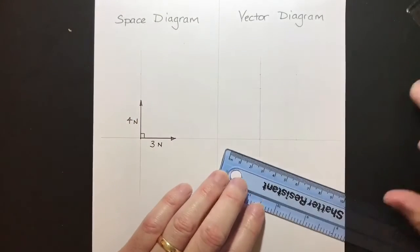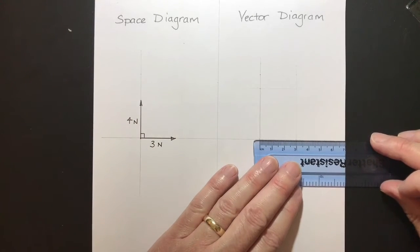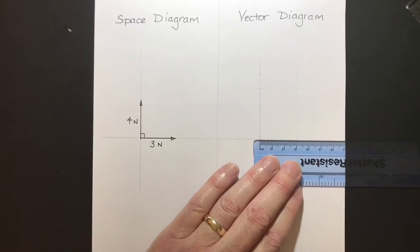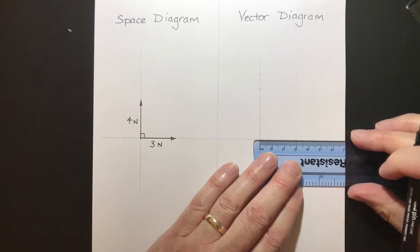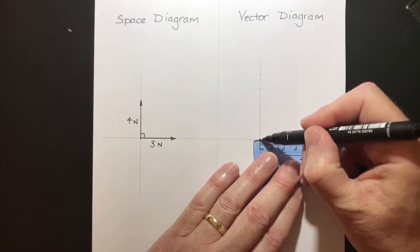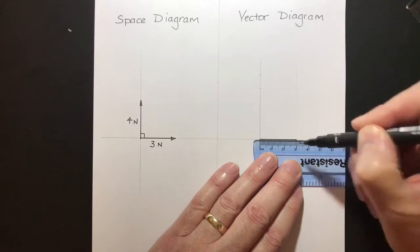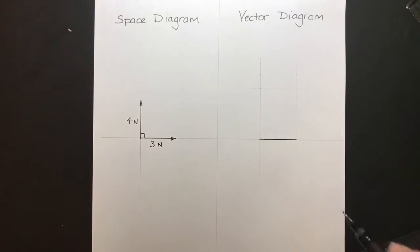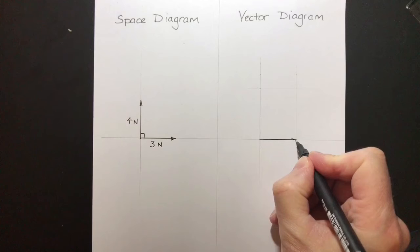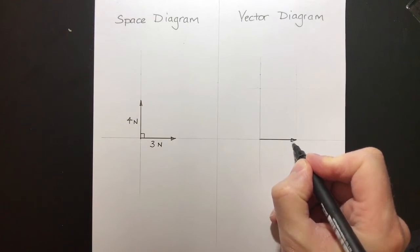Now, I can go back here and I can draw in the real vector. So it goes from there, 0, 2, 3. There we go. Now I'm going to put an arrow on the end to show which direction it's going in.